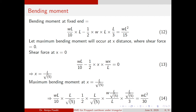The maximum bending moment will occur at a distance x where the shear force is zero. Equating shear force to zero at section x: the upward force is wL/10 and the downward force is half × x × (wx/L). Setting this equal to zero and solving, I get x = L/√5, which is where shear force is zero and bending moment is maximum. Substituting x = L/√5 into the moment equation gives the maximum bending moment as WL²/30.